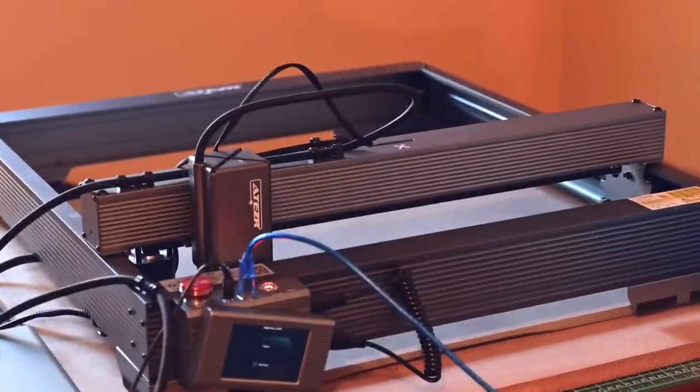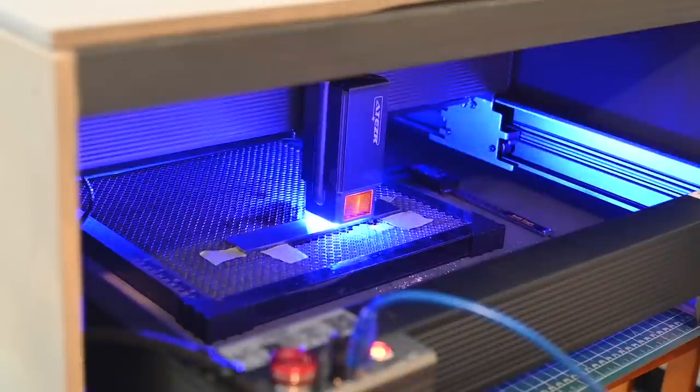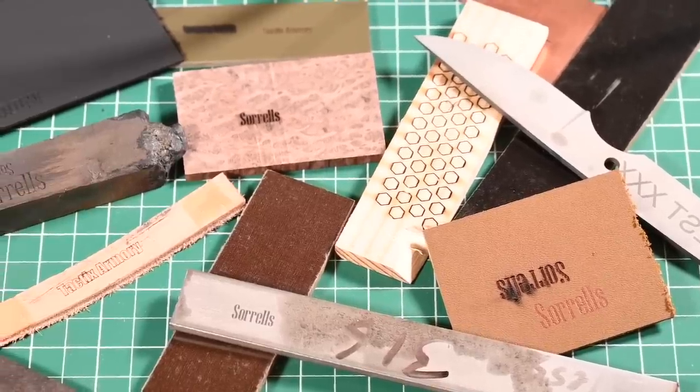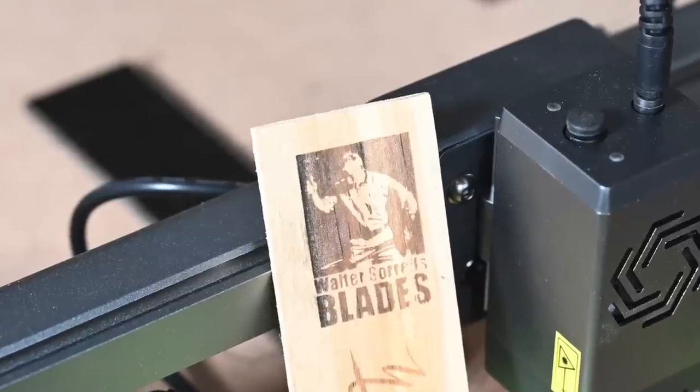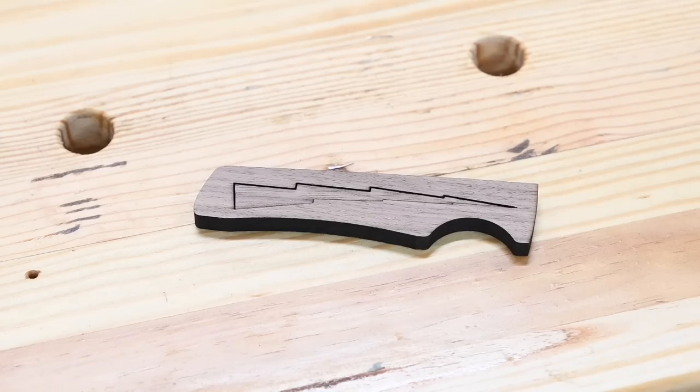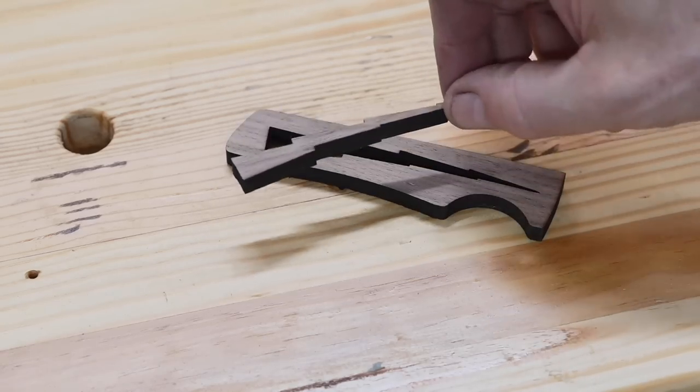Okay, so basics. What can you actually do with something like the Ateser? Basically two things. You can burn relatively superficial designs or patterns and stuff, like this, which I burned into a piece of wood with the Ateser. Or you can cut materials. Which materials? We'll get to that in a minute.